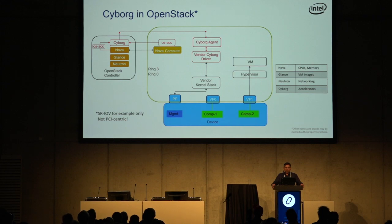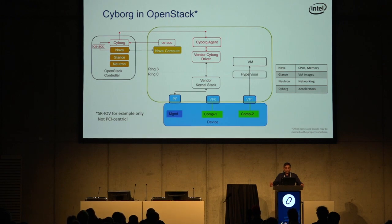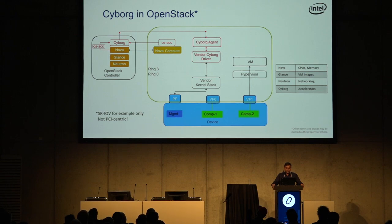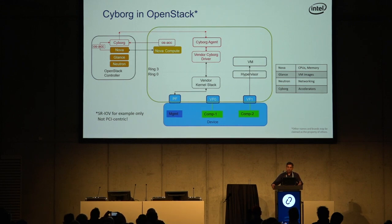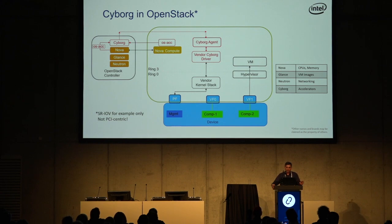Putting it all together and how it fits in OpenStack: on the controller side, you have Nova, Glance, and Neutron — Cyborg gets added to that. On the compute side, you've got the Cyborg agent. One thing worth noting is that Nova talks to Cyborg not by directly calling its REST APIs, but through an intermediate library called os-acc. This is based on the same principles as how Nova talks to Neutron through os-vif, or to Cinder through os-brick. The proposed model is to use os-acc as an intermediary between Nova and Cyborg.